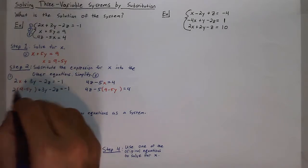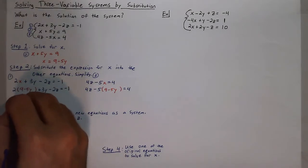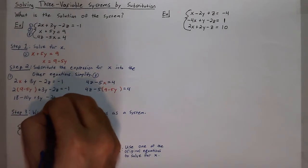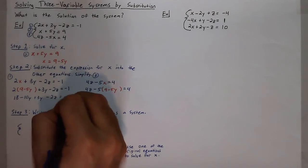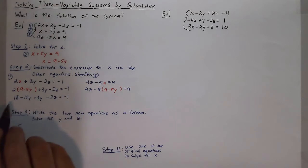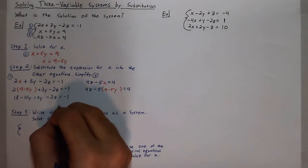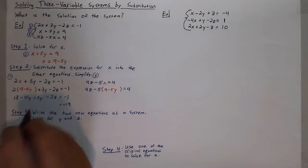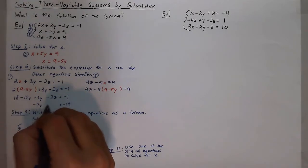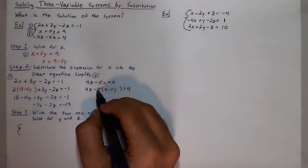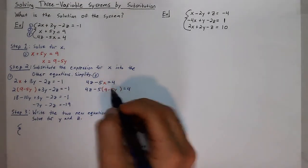Distributing the 2, I get 18 minus 10y plus 3y minus 2z is equal to negative 1. Subtracting 18 gives me negative 19 on the right, and I'll get negative 7y minus 2z.